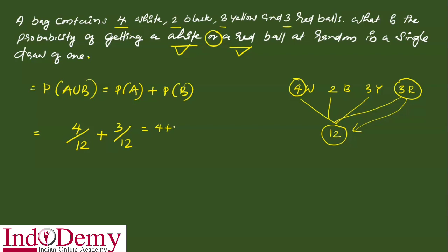4 plus 3 by 12 is equal to 7 by 12. So this is the answer.